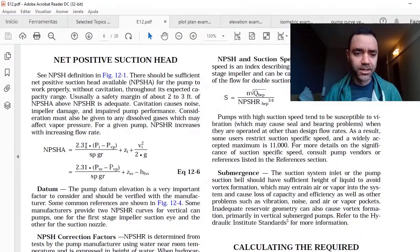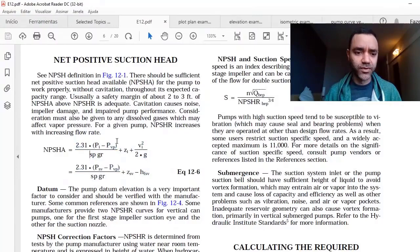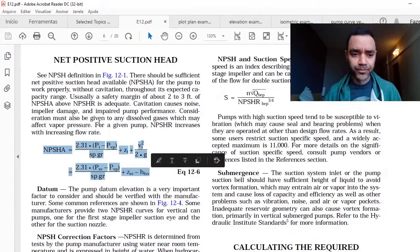And the 2.31 is because it is not in international units, okay. It is feet, PSI, etc. So because of that, we have this equation here.